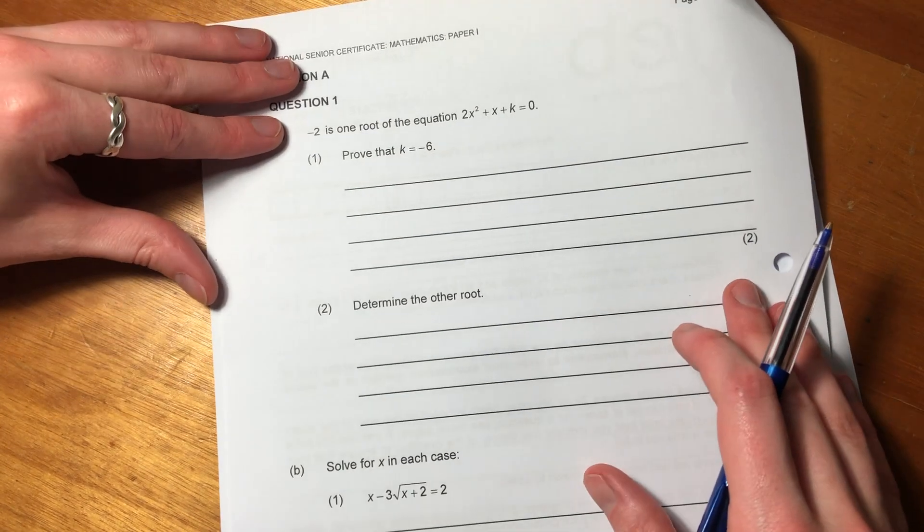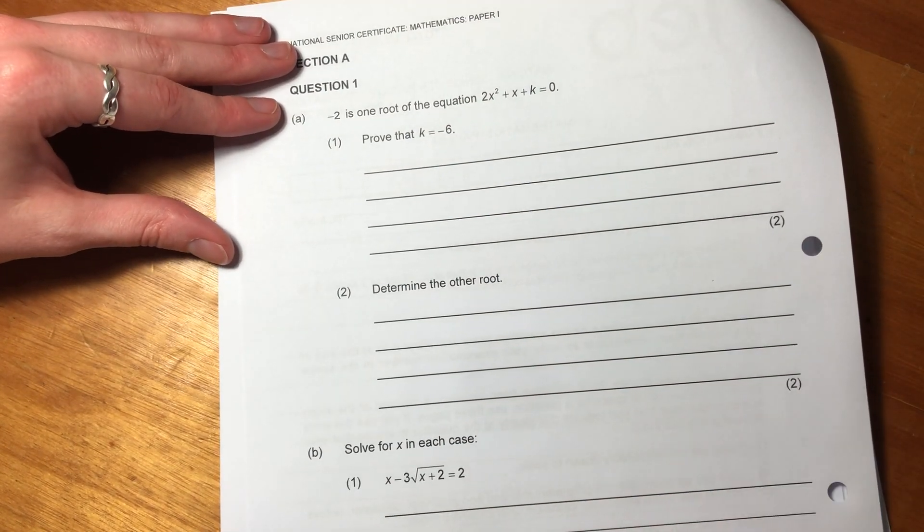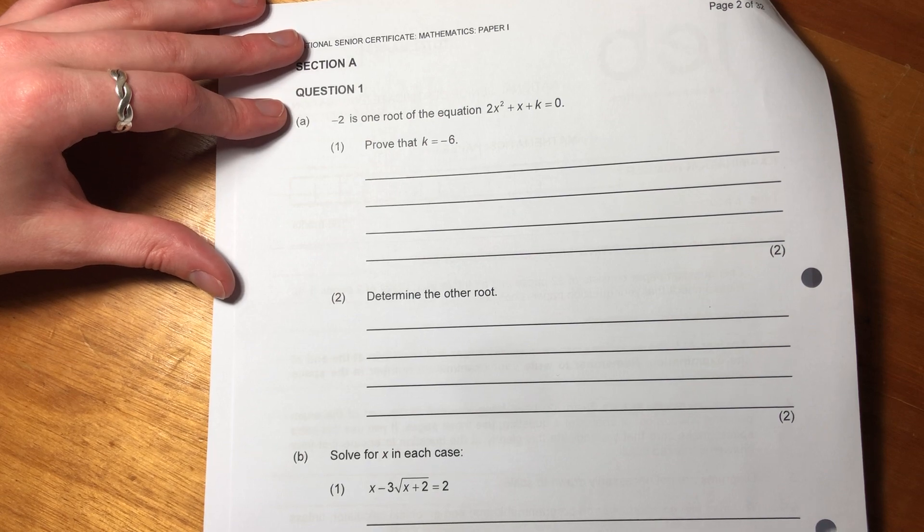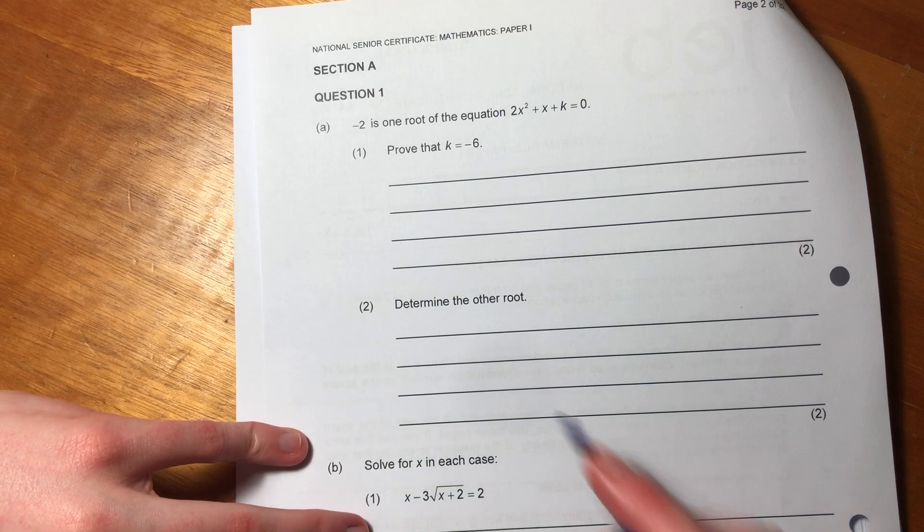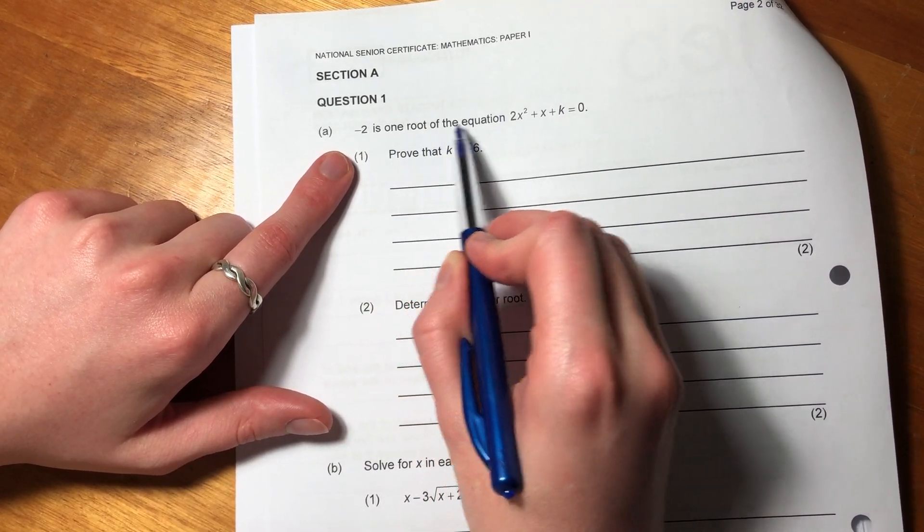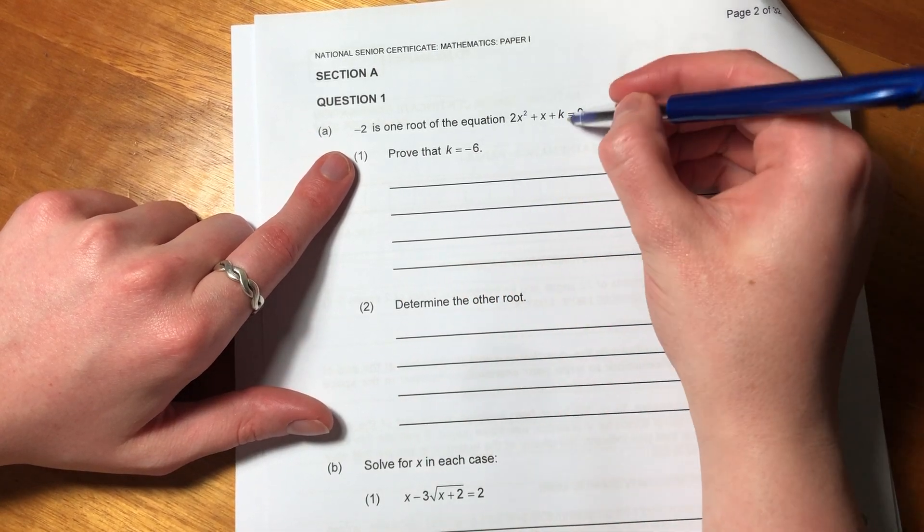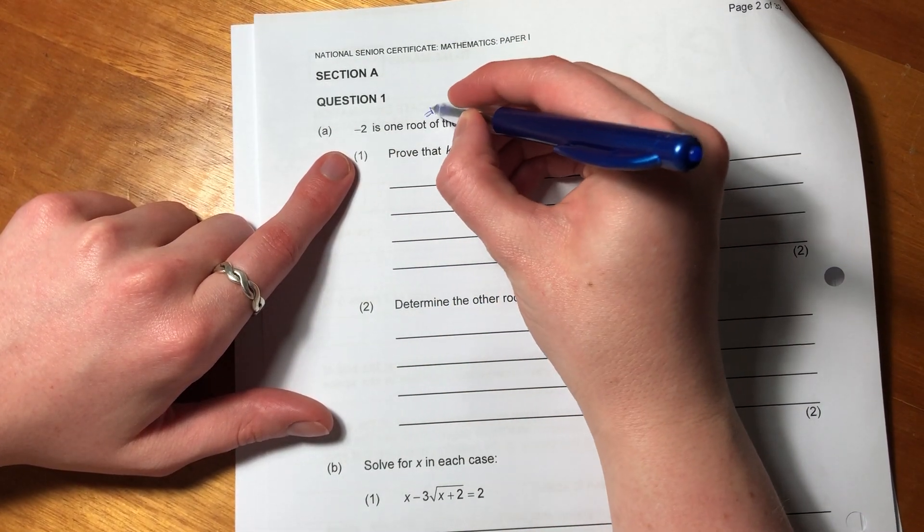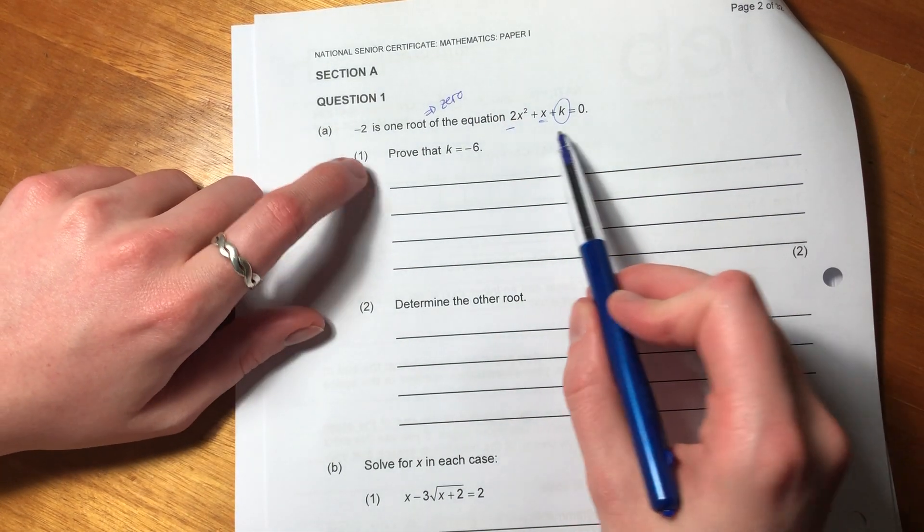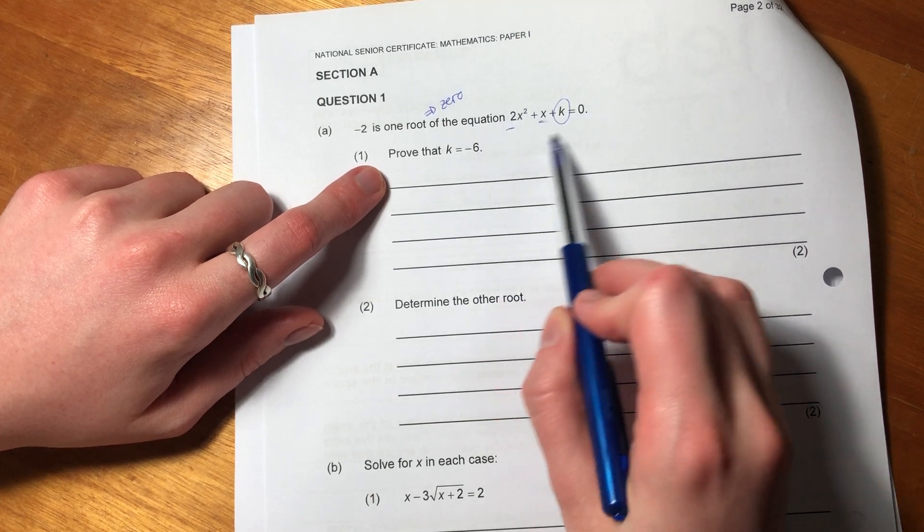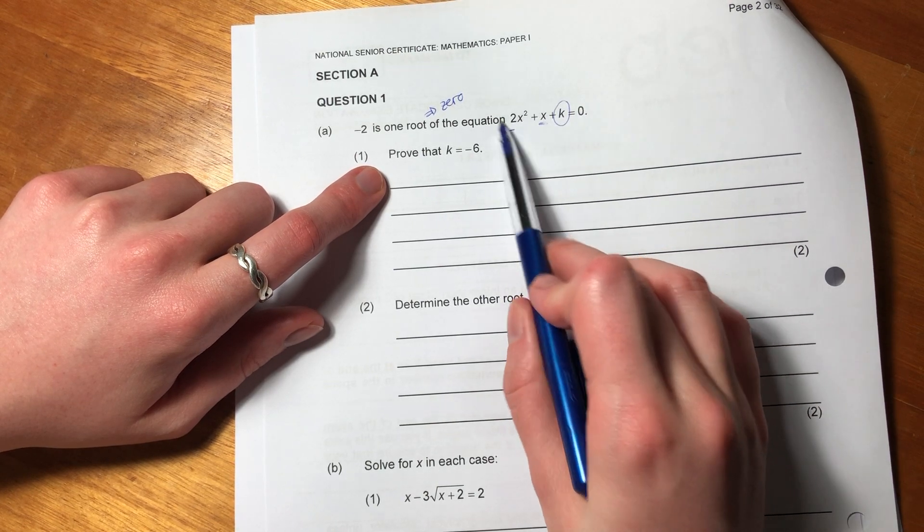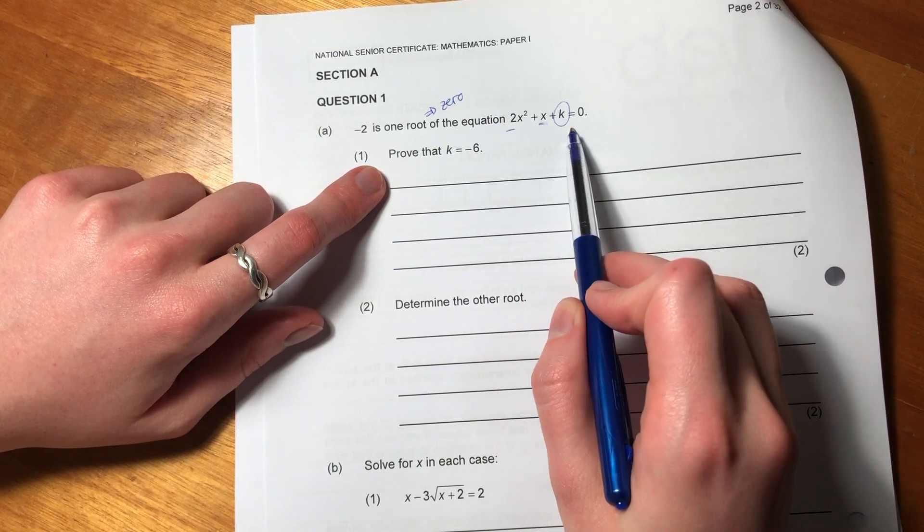Let's just jump into the paper now. Paper 1 always starts with a question to do with factorization and manipulation of roots and demonstrating that you understand some basic algebraic notation, but also its application. So it says negative 2 is one root of the equation. We can see that k is an unknown, and x is a variable, 2 is a coefficient. Importantly, when it says one root, it means that it's a zero. Another word for a root is a zero. What it means is when I plug negative 2 into this equation, this side equals zero. Basically, it satisfies this equation.